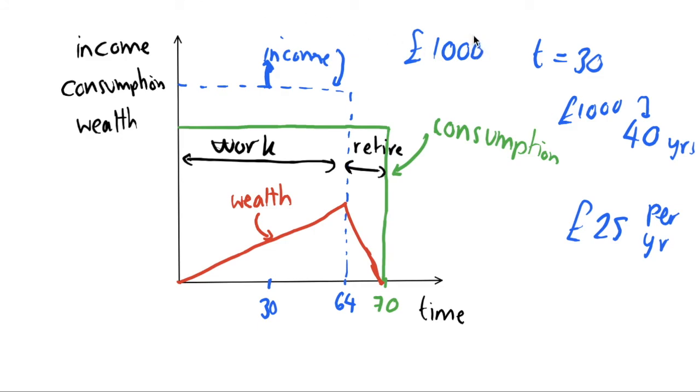So we're going to spread that £1000 over 40 years such that we're just spending £25 per year, nothing too crazy.